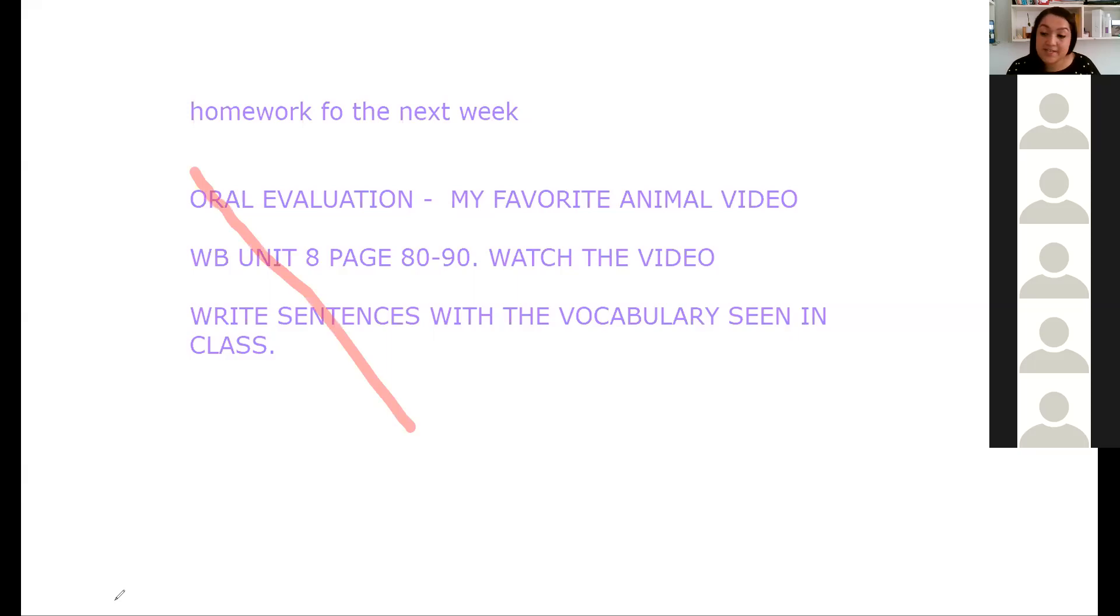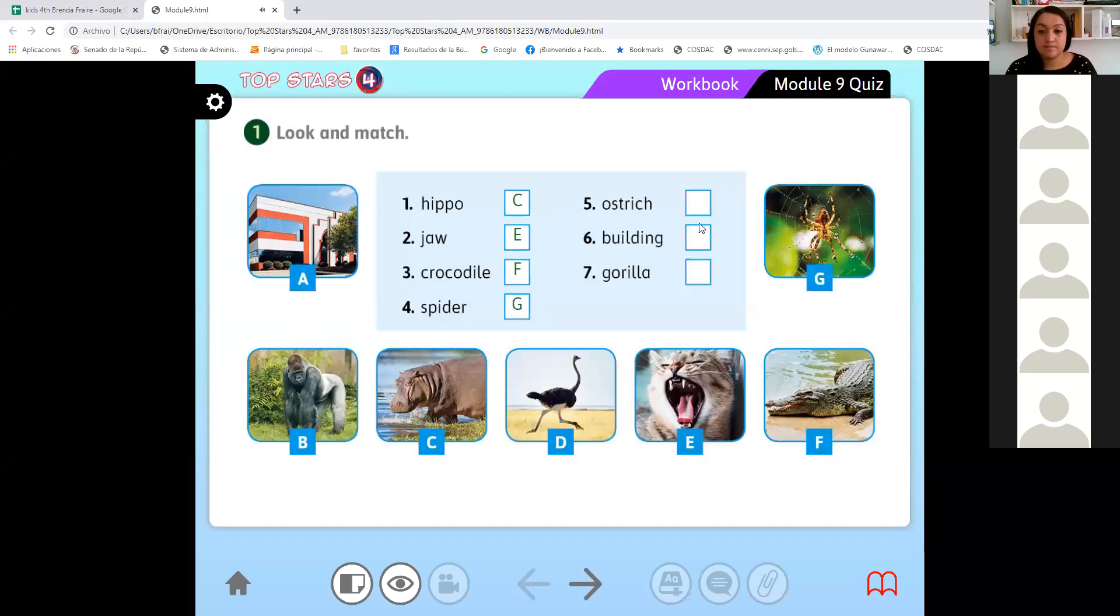'Crocodile. What number is it? F. Letter F. Very good. Spider. Letter? G. Very good. Ostrich. D. We have the ostrich on the letter D. Perfect. The building. Which letter is it? A. It is the letter A. Perfect. And number seven, the gorilla. B. Letter B. Perfect. Now we can check our answers. Please copy down your answers and then we can continue with the next exercise.'